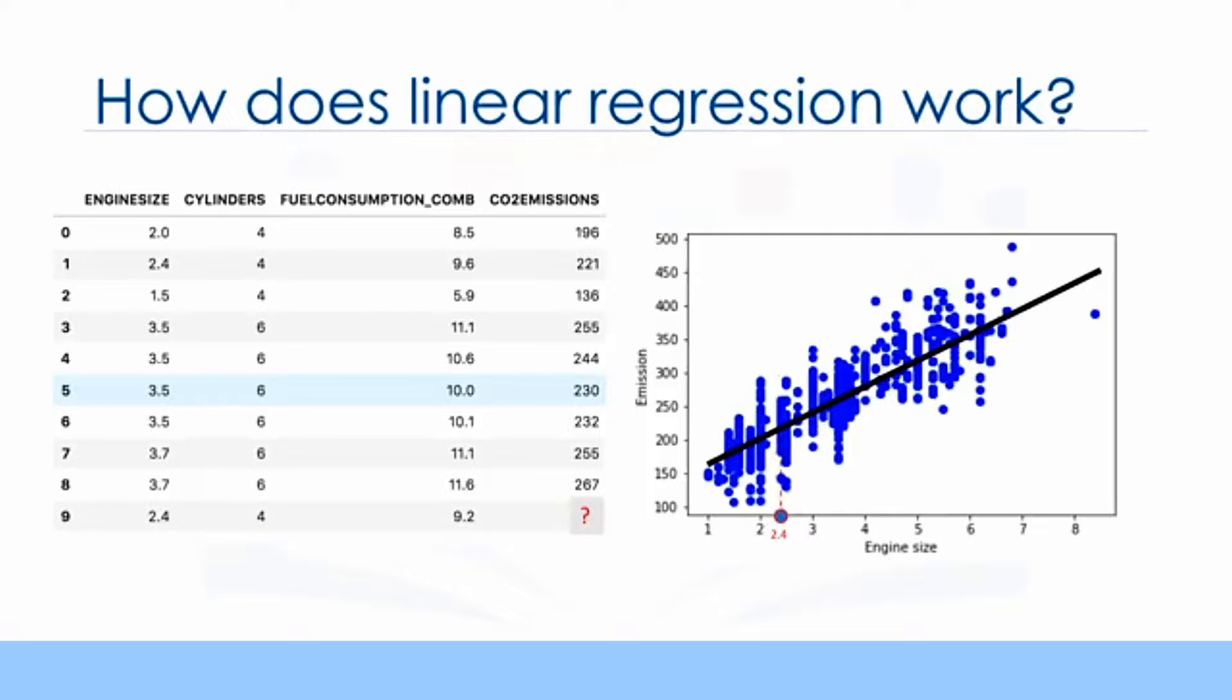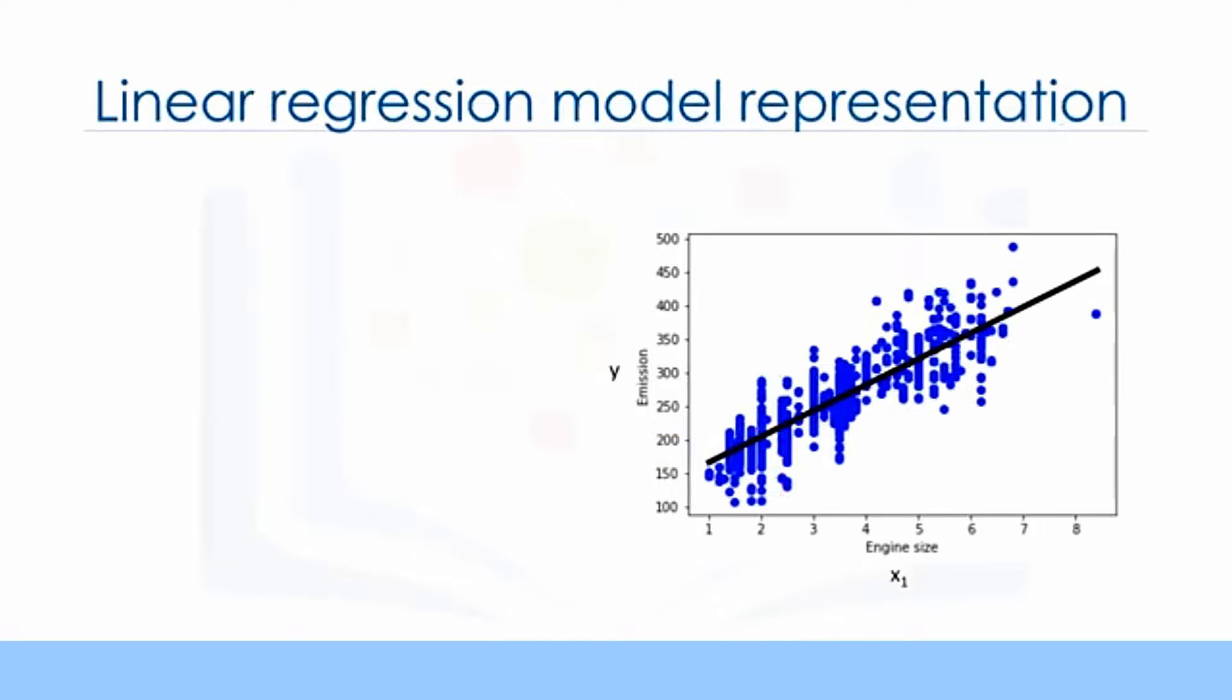Let us assume for a moment that the line is a good fit of the data. We can use it to predict the emission of an unknown car. For example, for a sample car with engine size 2.4, you can find the emission is 214. Now, let's talk about what the fitting line actually is. We're going to predict the target value y, in our case using the independent variable engine size, represented by x1. The fit line is shown traditionally as a polynomial. In a simple regression problem, a single x, the form of the model would be theta 0 plus theta 1 x1.